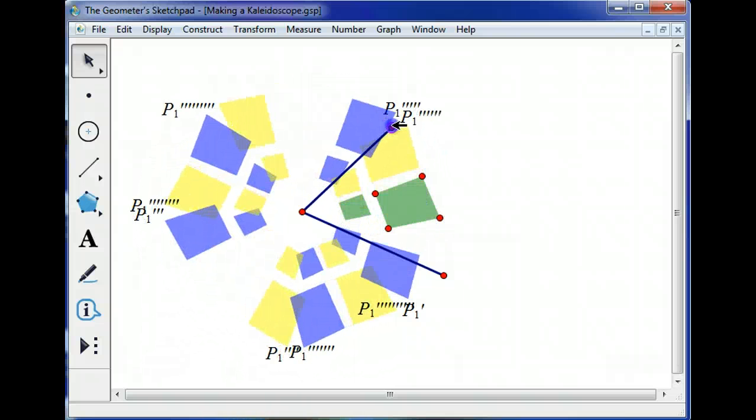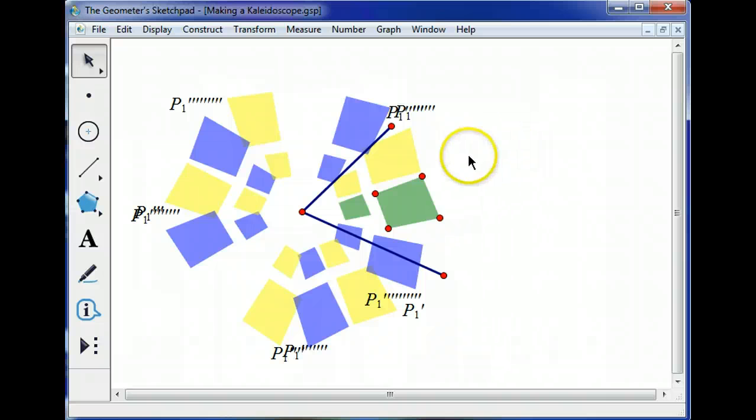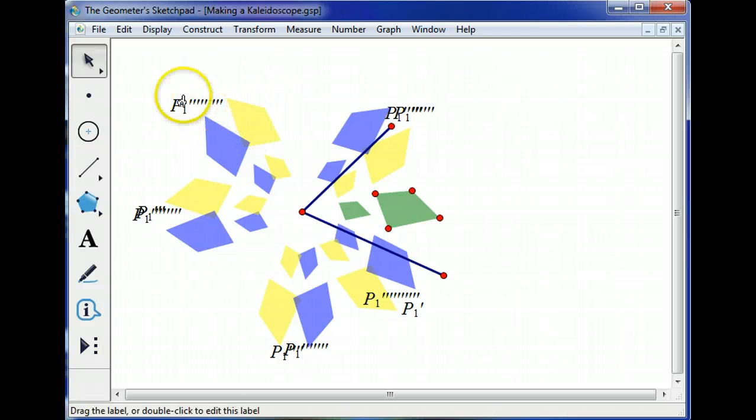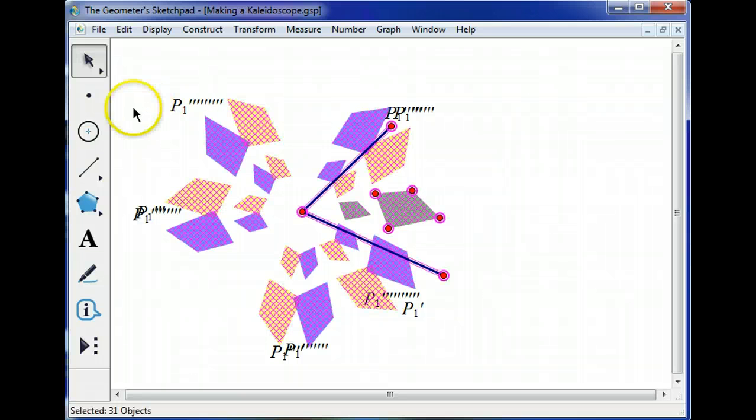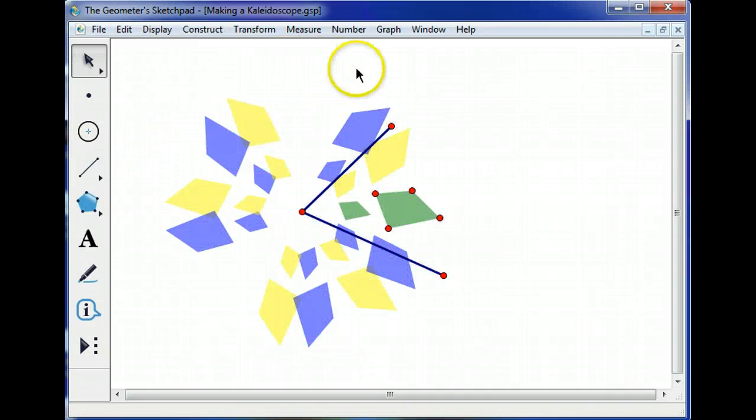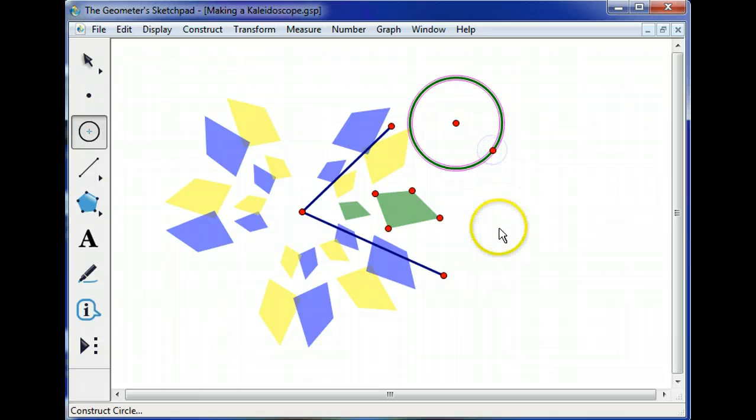Now comes the fun part. I'm going to link the vertices of this original polygon here to different objects and animate them. And while we're at it, why don't we hide the labels of this stuff? So I'm going to control A to select everything. Display show labels. And then display hide labels. That unclutters everything. All right. I'm going to create a couple of circles. There's one. There's two.